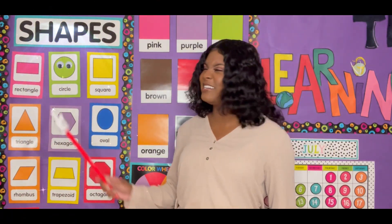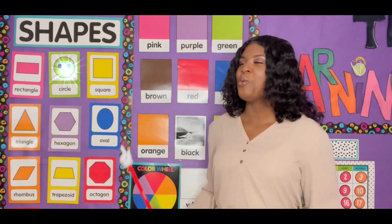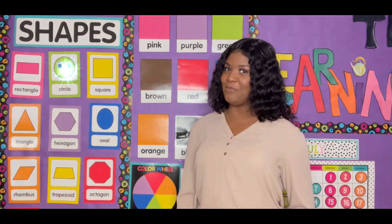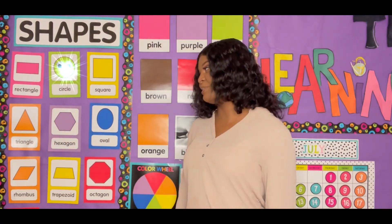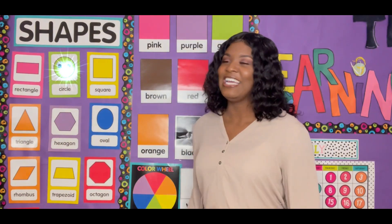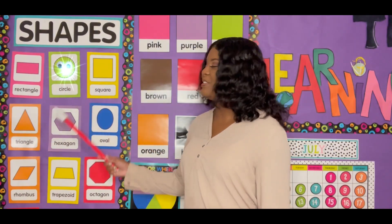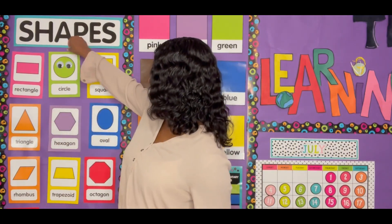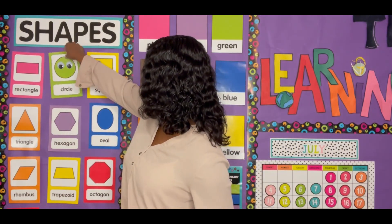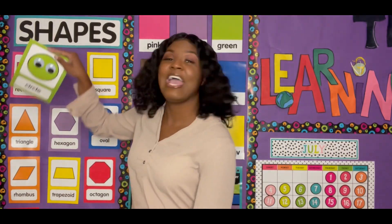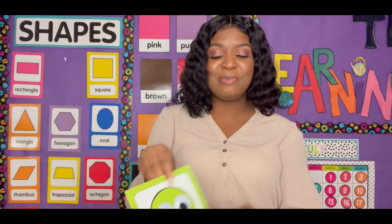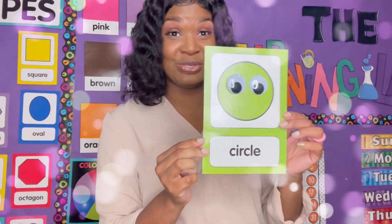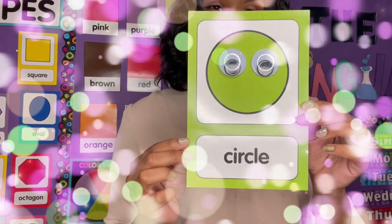Now take a good look at our shapes one more time. One of our shapes looks a little bit different from all of the others. That's right, it's Mr. Circle. Today we're going to learn about Mr. Circle. I'm going to take Mr. Circle now and we're going to do a little bit of talking about him. Here is Mr. Circle. Take a good look at him.